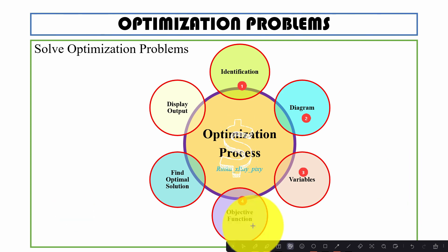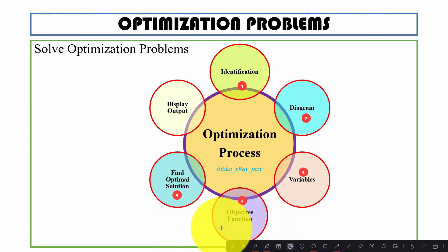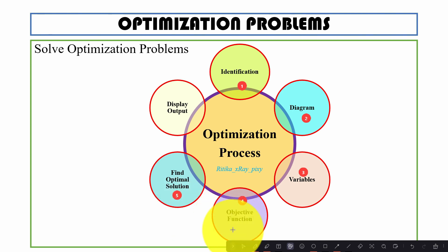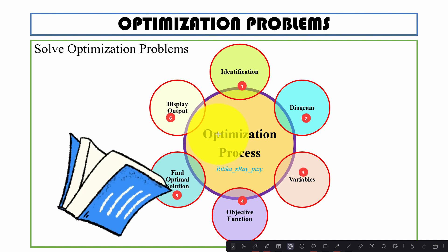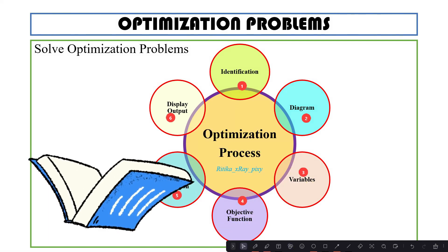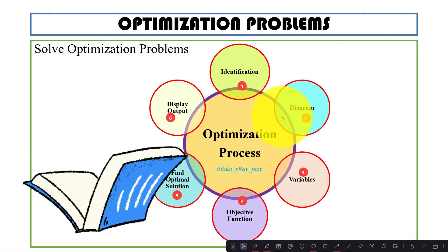Next, we formulate the objective function that we will use for minimization or maximization. We use certain constraints to express the objective function. Then, using an optimization technique with the help of this objective function, we find out the optimal solution for the given problem. Finally, we display the best solution that is found.